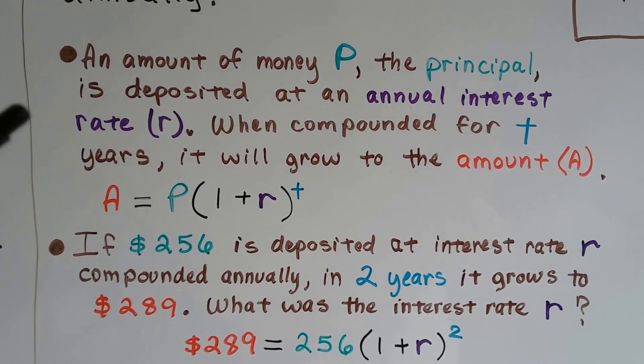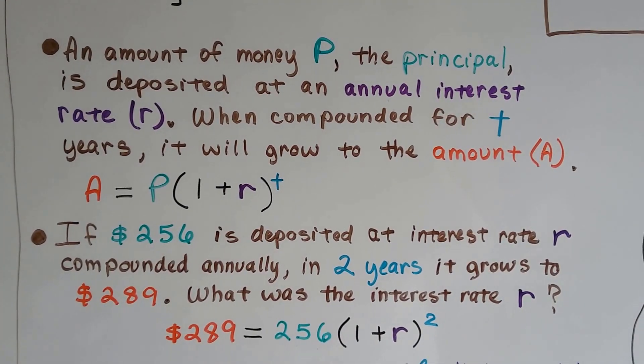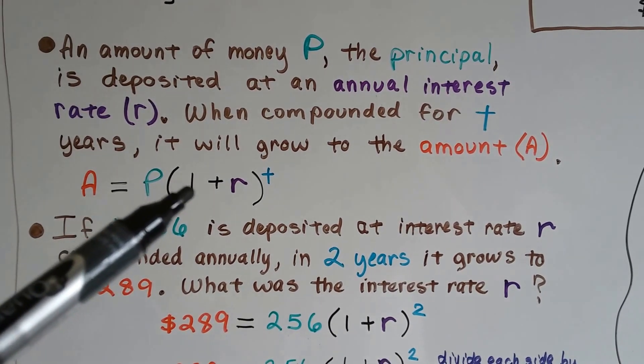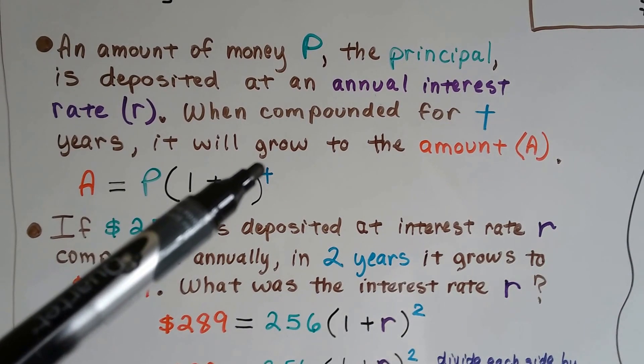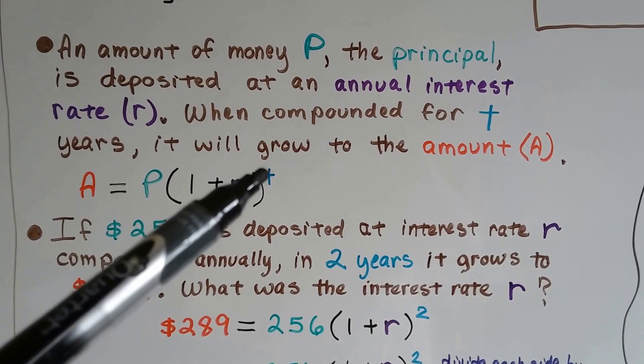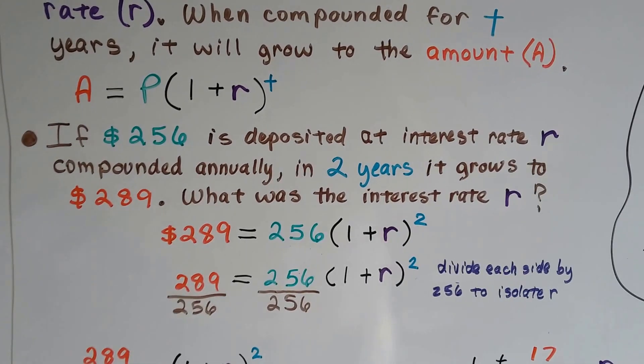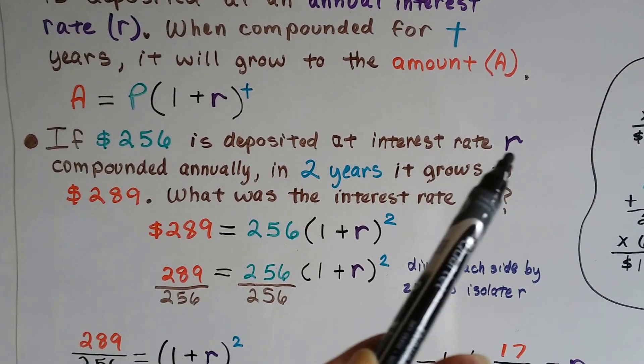And compounded for T years. Our little T is right here in the formula. And it's going to grow to the amount A. So here's our principal. And it's multiplied by 1 plus the interest rate R, and to an exponent of the amount of years.